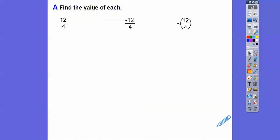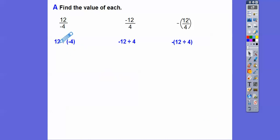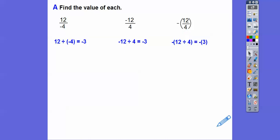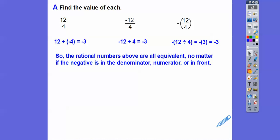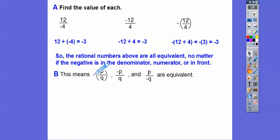Let's find the value of each. A quotient, a fraction, a ratio — other ways to say fraction — is just a division sign, so it's top divided by bottom. So here we have a positive divided by a negative — this one's negative, so this one's going to be negative 3. Here we have a negative divided by a positive, so negative 3. So I get negative 3 there, negative 3 there, and here 12 divided by 4 is 3, but this is the opposite of 3, so the opposite of 3 is negative 3. It doesn't matter if the negative is in the denominator, the numerator, or out in front of the fraction — they're all equivalent fractions.